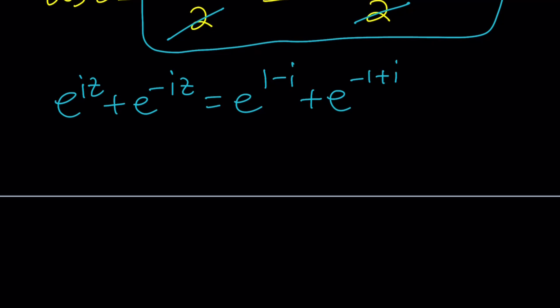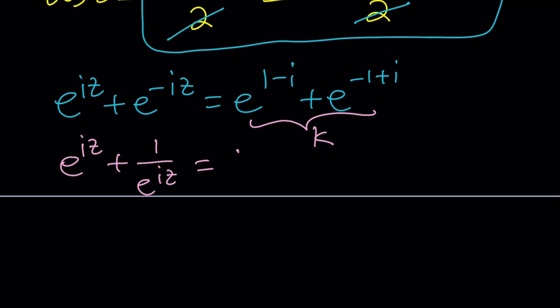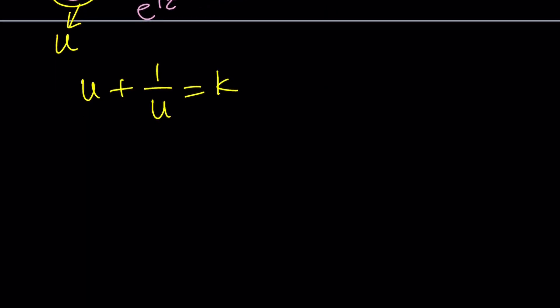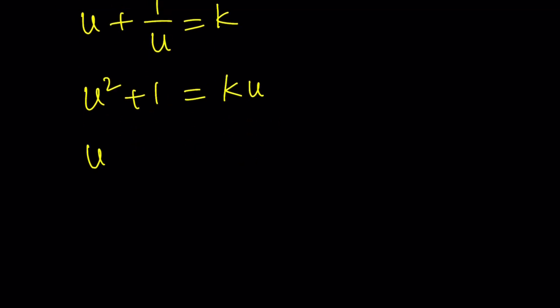We also need to compare our answers to Wolfram Alpha, so it's important to go through this. On the right-hand side we have a constant — let's call that k. We can write this as e to the iz plus 1 over e to the iz equals k. And e to the iz we can call u. Then this gives us u plus 1 over u equals k. Multiplying everything by u: u squared plus 1 equals ku, and then u squared minus ku plus 1 equals 0. This is our quadratic, and we can solve it using the quadratic formula.